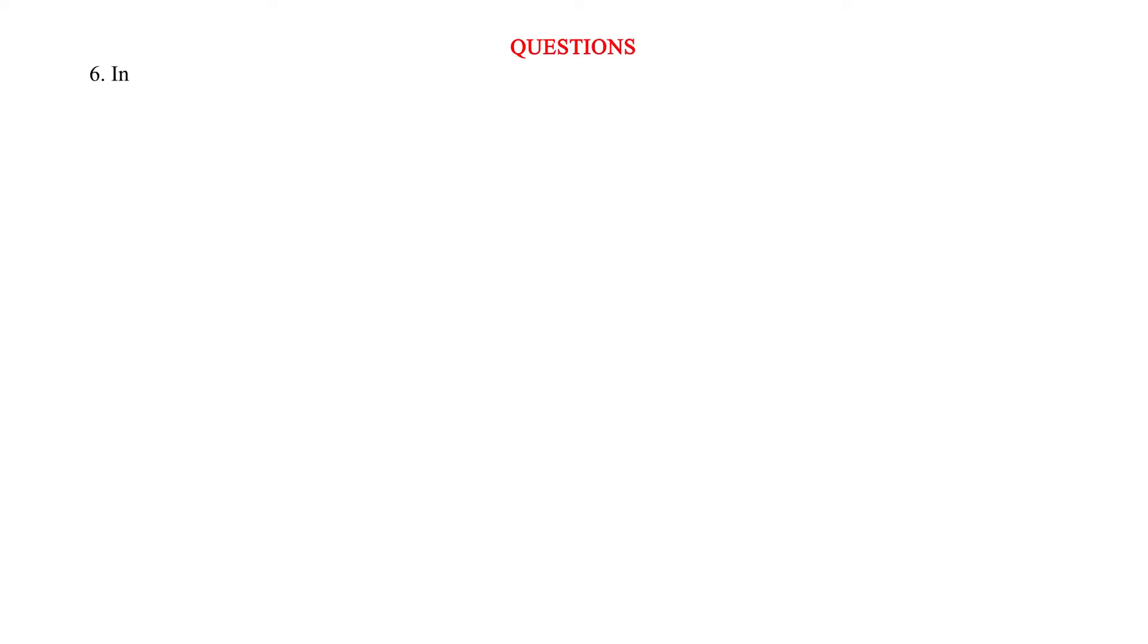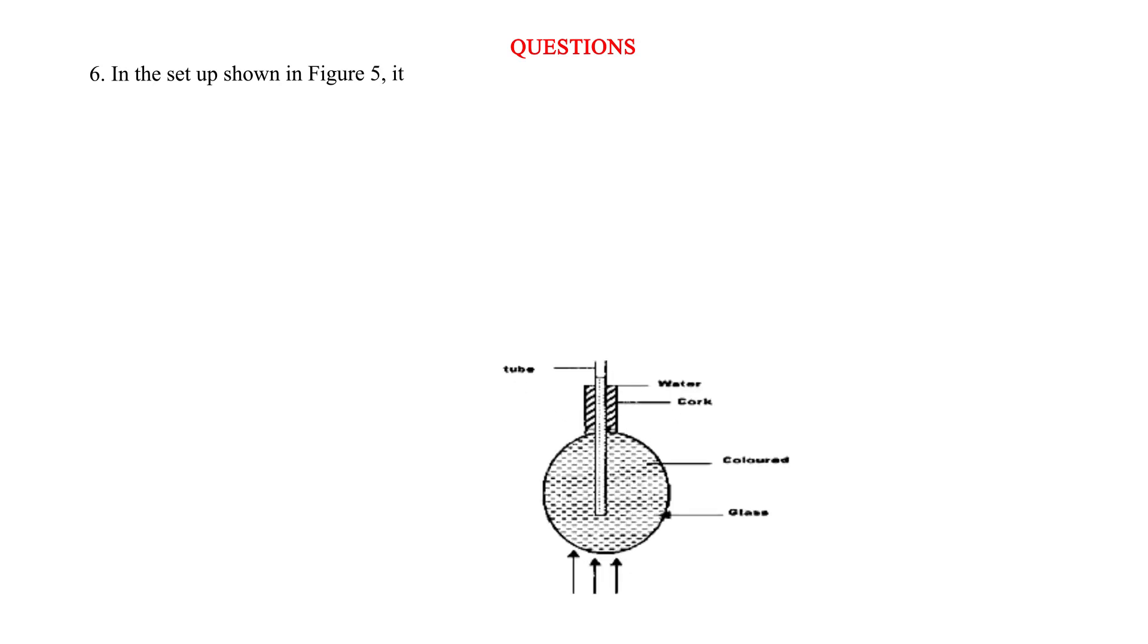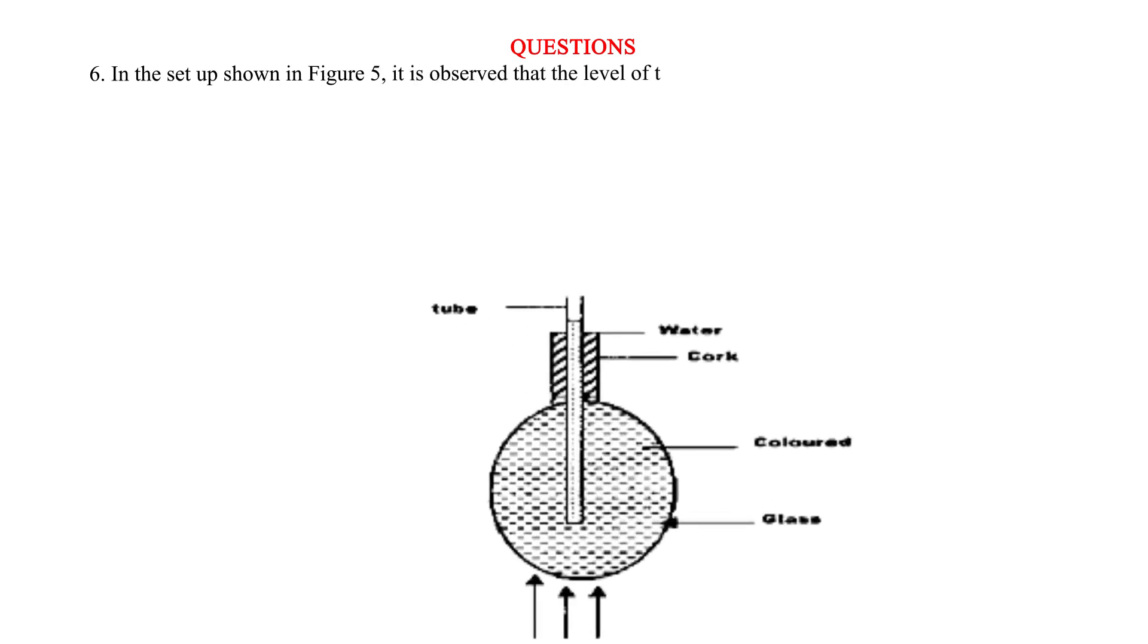Question 6: In the setup shown in Figure 5, it is observed that the level of the water initially drops before starting to rise. Explain this observation. Solution: Glass flask initially expands. Heating increases the volume of the flask.